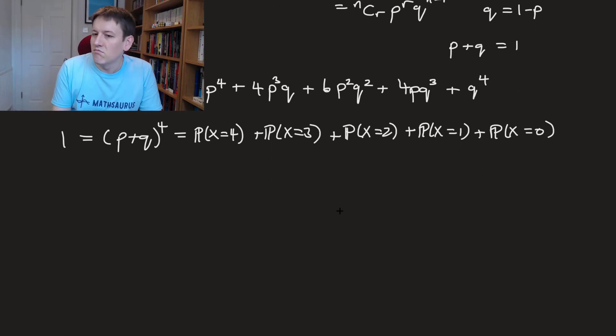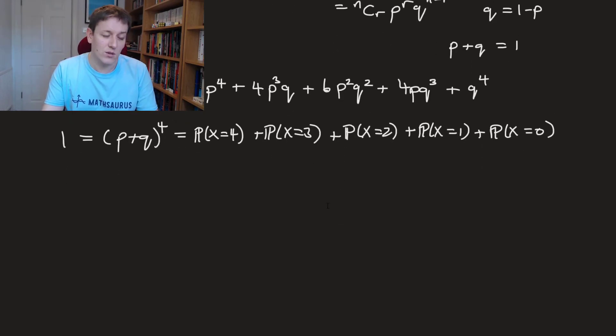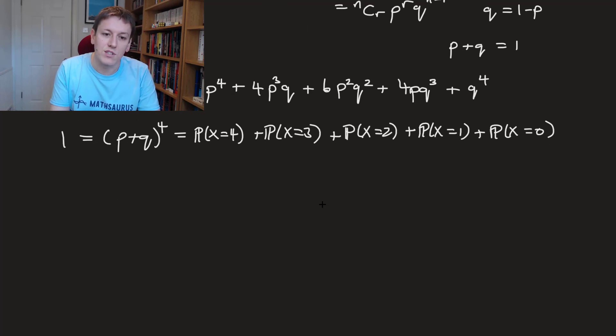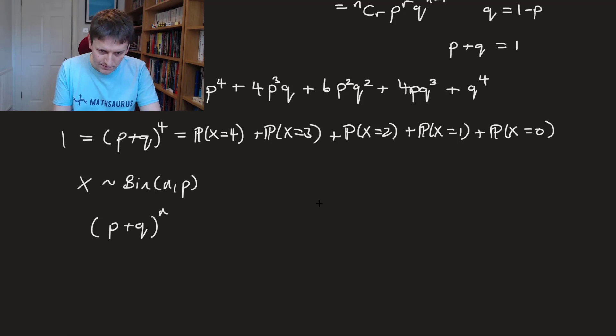Right, so that gives you the idea of how this works, and it's also true in general. In fact, if we just took X to have a general binomial distribution with parameters n and p, then I could expand (p + q) to the power of n. And again, if I think of p and q as the success and failure probabilities, so they add up to 1, whatever the value of n, this will be 1. And if you take each of the terms individually, they will be each of the individual probabilities.